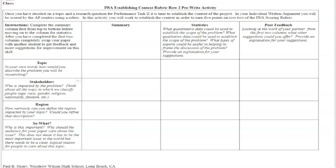For those watching on YouTube, there is a link to this document in the description for this video. We're going to identify our topic, our stakeholders, the region, and the 'so what' or 'why' for our particular paper. In the left-hand column, identify a summary in your own words. In the middle column, try to identify some statistics you can use to communicate to the AP reader. Then, once you've filled out those two columns, share this with a peer — swap and look at each other's work and provide feedback on how it could be improved. The link to this pre-write activity will be in the description.